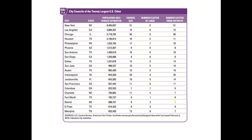Looking at the structures of city councils of the 20 largest cities, there's not necessarily a correlation between the size of the city and the size of the city council. Some of the biggest cities have quite a few council members, but interestingly Indianapolis has 29. We talked about at-large elections, and we see there are several cities that do not have any at-large elections, meaning they are divided into districts and representatives are elected from those districts. For example, Jacksonville has five at-large and 14 elected from districts.